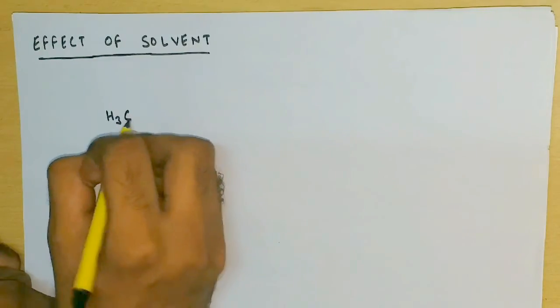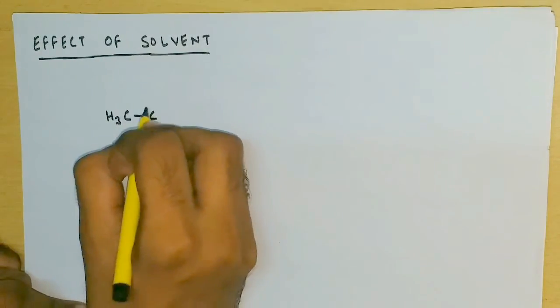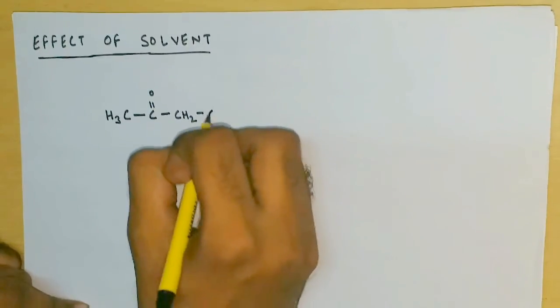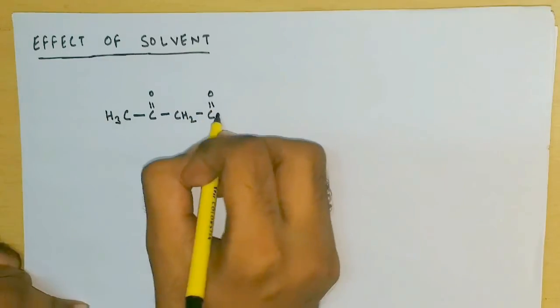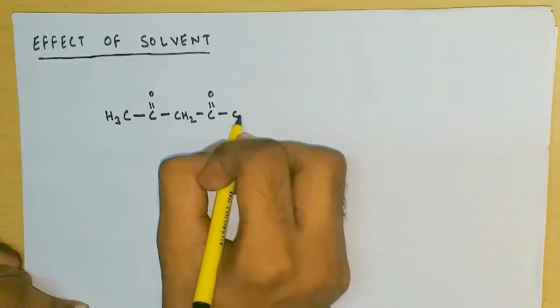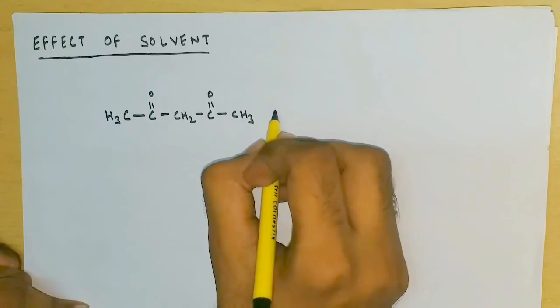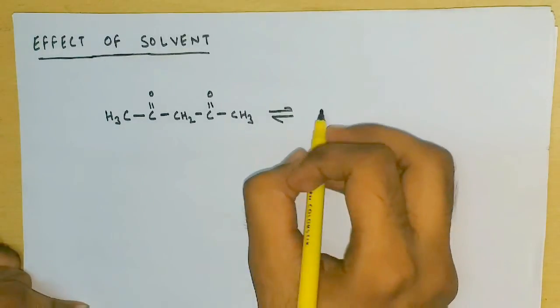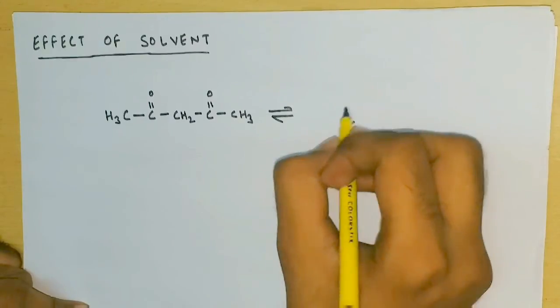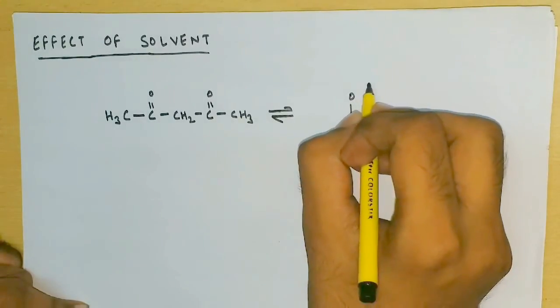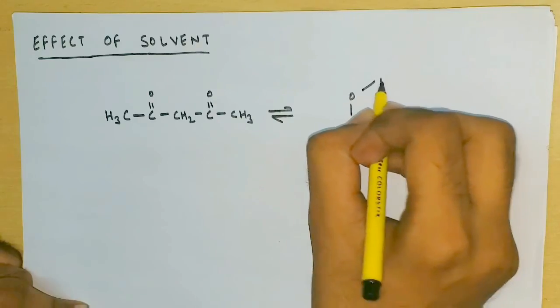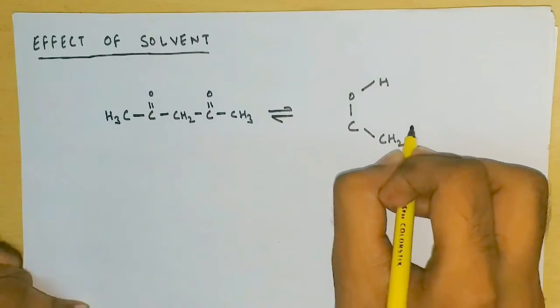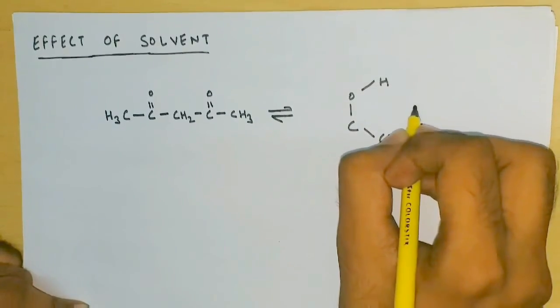For instance, we are taking the same compound which we analyzed in the previous video, a 2,4-diketone. We drew it in enol form so as to see the hydrogen bonding clearly in a six-membered ring fashion.